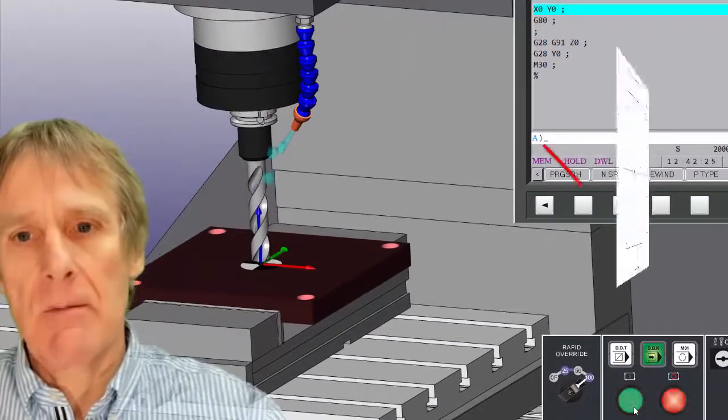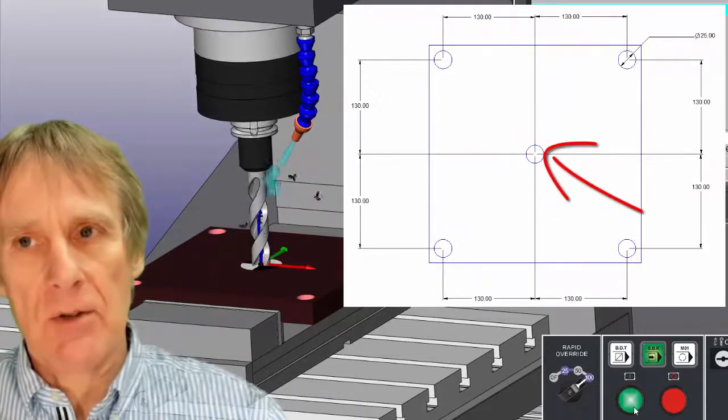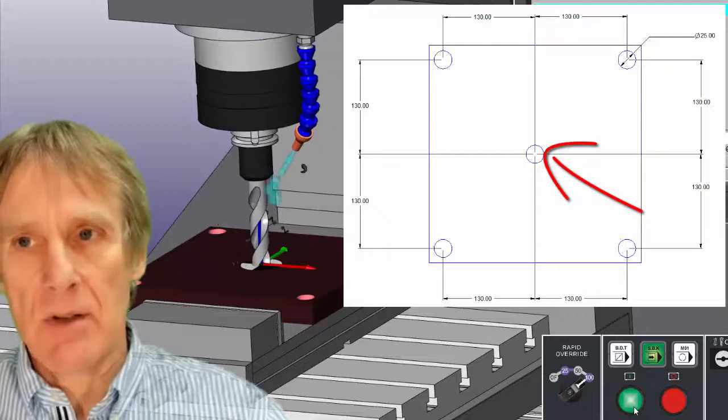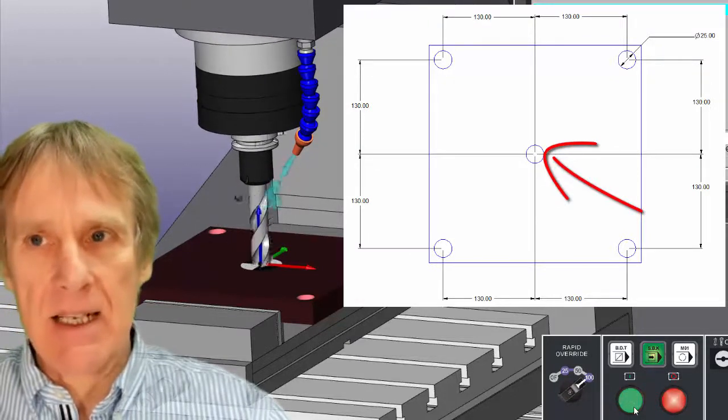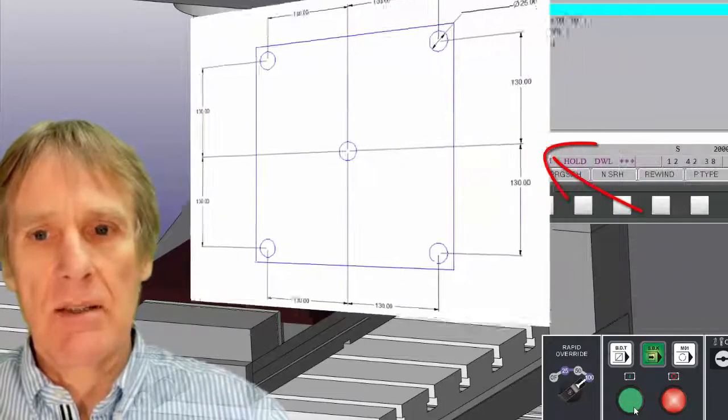And that's straight through that datum, because that datum is the centre of the component. So that X zero Y zero, there's only one position that is X zero Y zero.